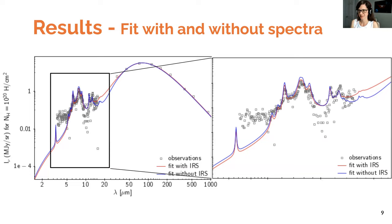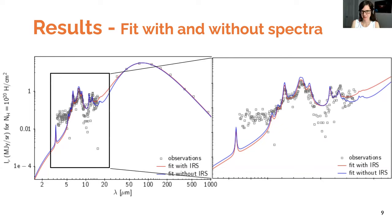The last question: do you find any particular relation between grain size or composition and emissivity? Yes — the larger the grains, the more emission at longer wavelengths because they are cooler, and the smaller grains are hotter so they emit more at shorter wavelengths. It's essentially a temperature dependence.